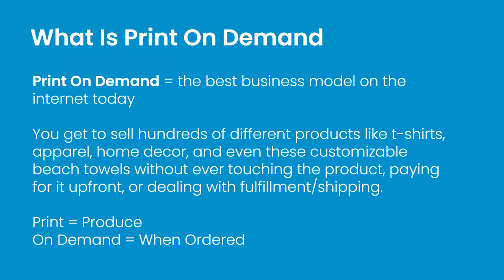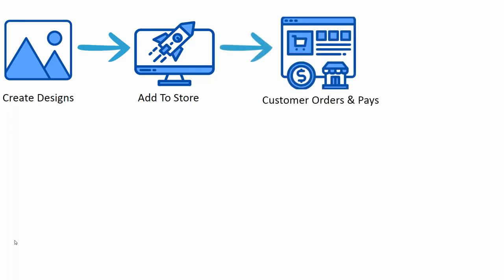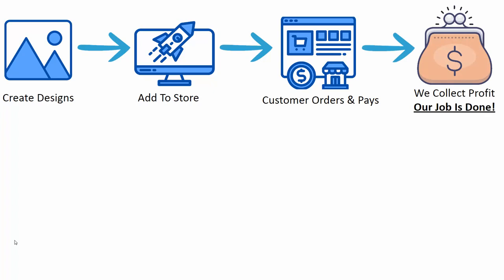This should be the light bulb moment — you could literally sell a product, collect payment, and get paid for a product that doesn't even exist yet, and then all the rest of the work happens automatically. When an order comes in, you get paid. We collect the profit and there's nothing else to do. We don't touch the product, we don't have it in our warehouse. Everything happens automatically — our job is done, we collect our profits and sit back and relax.